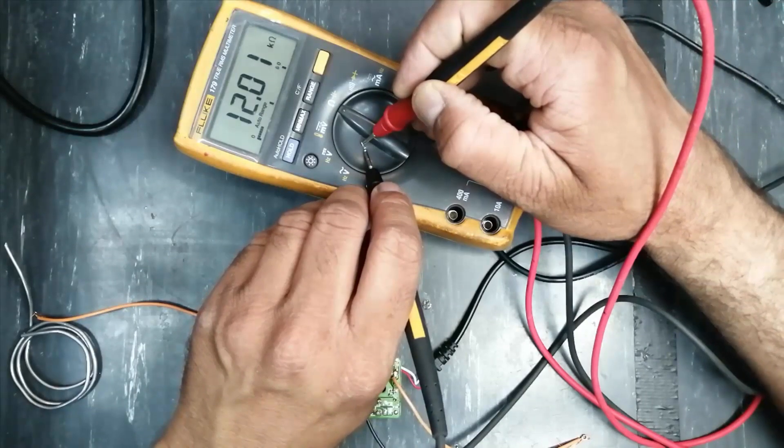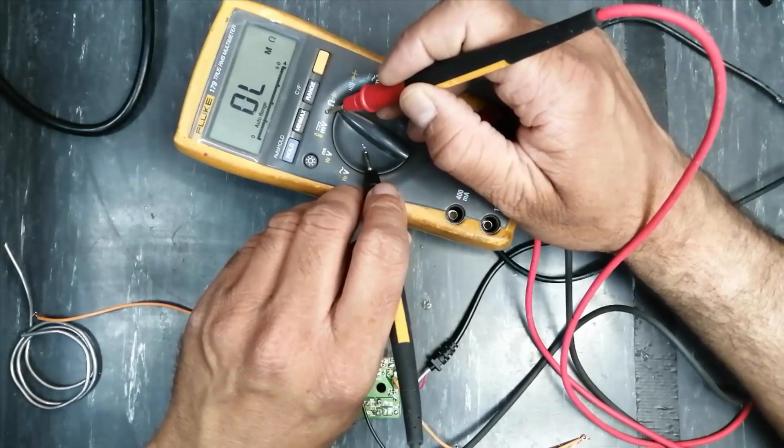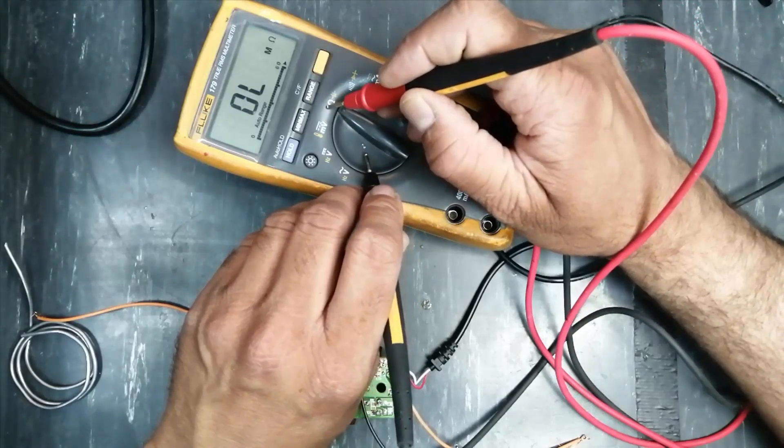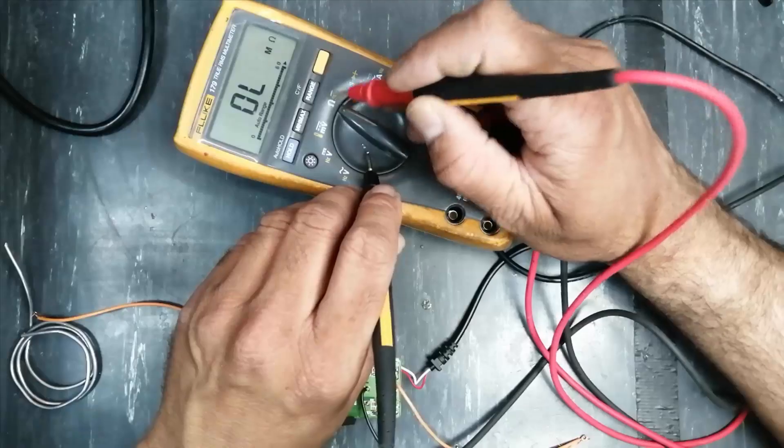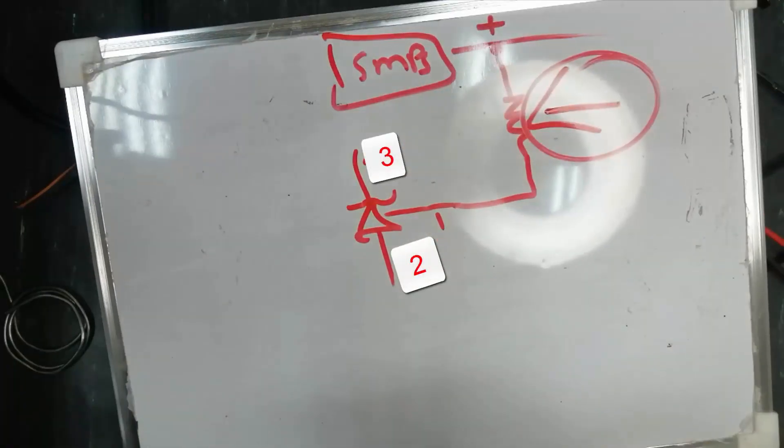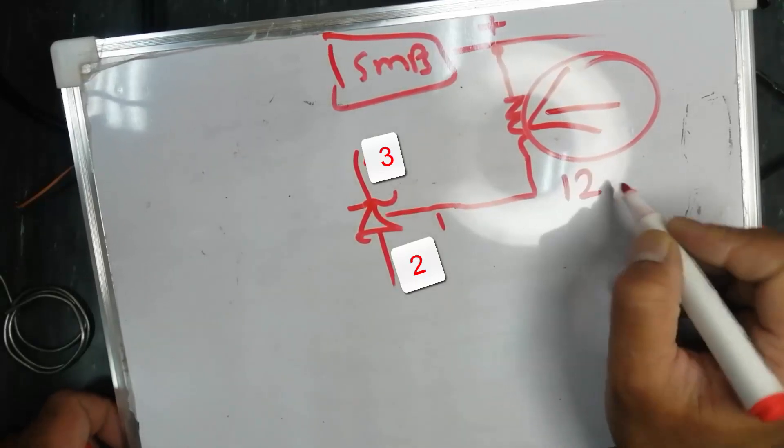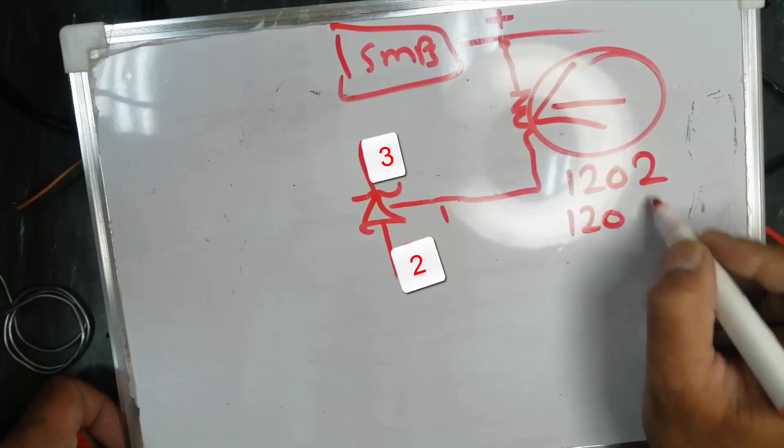One two zero two code, that means 12k. One two zero and two zeros: one two zero two zeros equals 12k. This is voltage reference pin number one. Here it is one two zero two, that means 12k.